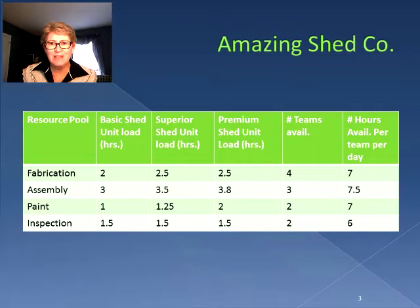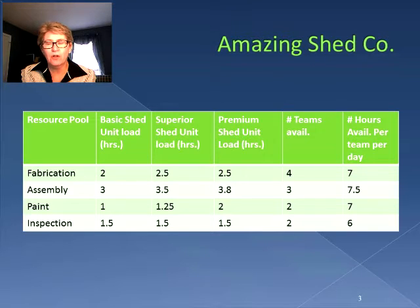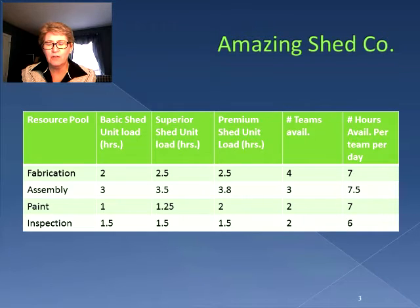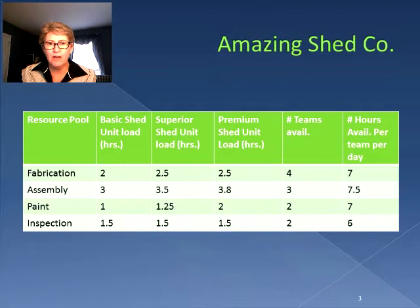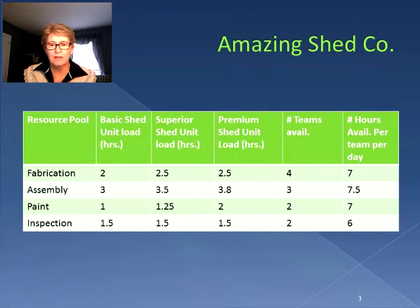So you can see that each different kind of shed has a different unit load. In the fabrication area there are four teams available, three for assembly, two for paint, and two for inspection. When we look at the number of hours available per team per day, there are 7 hours available in fabrication, 7.5 for assembly, 7 for paint, and 6 for inspection.